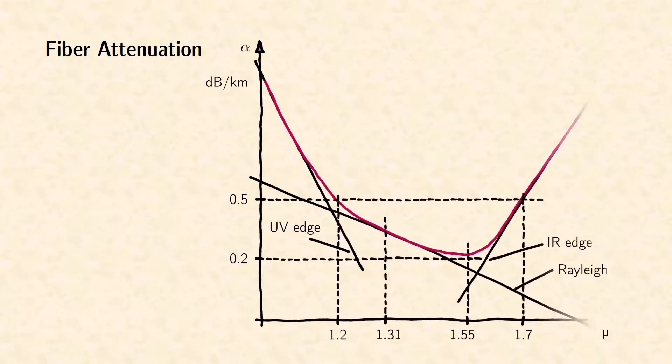The attenuation spectrum of silica fibers shows the typical V-curve shape, as explained in my video on optical glasses. The range from 1.2 to 1.7 micrometers with an attenuation below 0.5 dB per kilometer is usually considered the transmission window of the silica fiber.